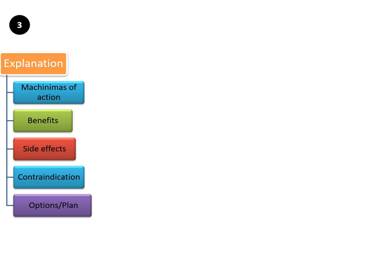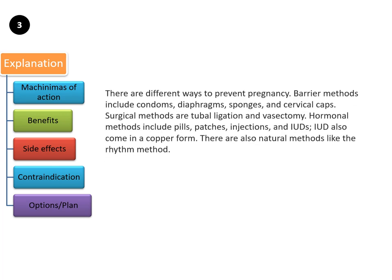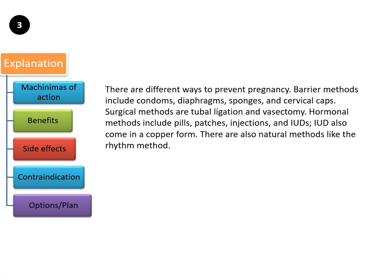If a patient wants to explore more options, we can explain: There are different ways to prevent pregnancy. Barrier methods include condom, diaphragm, sponges, and cervical caps. Surgical methods are tubal ligation and vasectomy. Hormonal methods include pills, patches, injections, and IUD. IUD also comes in copper form. There are also natural methods like the rhythm method.